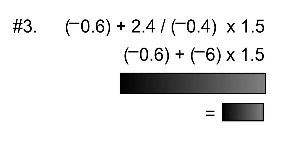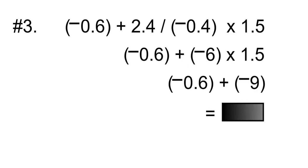So negative 0.6 plus negative 6 times 1.5. Next is going to be multiplication, so negative 6 times 1.5 is going to be negative 9. So we have negative 0.6 plus negative 9.